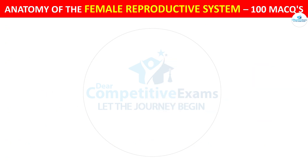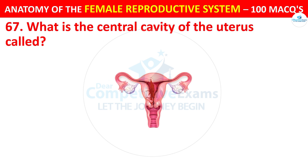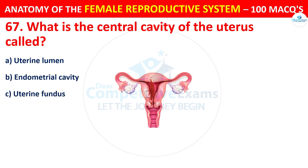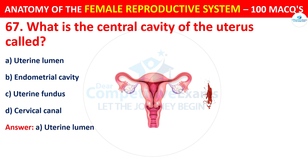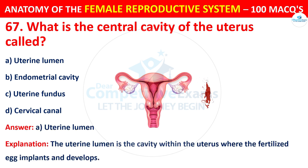Question number 67. What is the central cavity of the uterus called? The correct answer is A — the uterine lumen. The uterine lumen is the cavity within the uterus where the fertilized egg implants and develops.